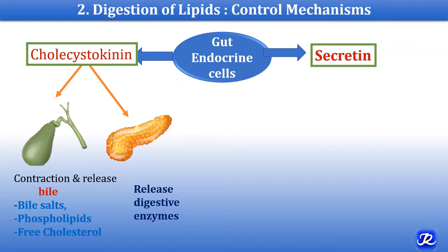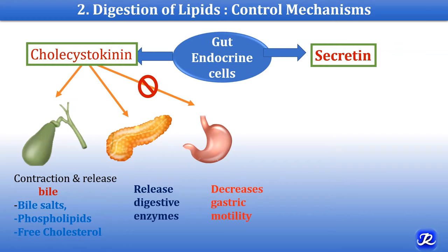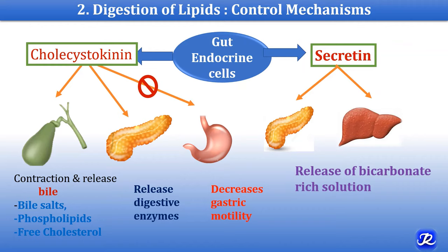Cholecystokinin also decreases gastric motility, resulting in slower release of gastric contents into the small intestine. The second hormone, secretin, is synthesized by intestinal cells in response to the low pH of chyme entering the duodenum. It acts on the pancreas and liver to produce a bicarbonate-rich solution, which helps to neutralize the pH of intestinal contents to the appropriate pH suitable for the digestive activity of pancreatic enzymes.